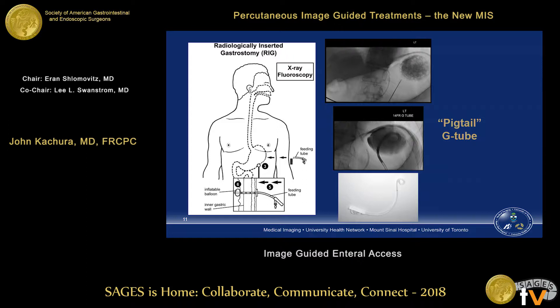For a radiologically inserted gastrostomy tube, the simplest approach is to use a pigtail or cope loop catheter. We inflate the stomach — usually via a nasogastric tube, but sometimes just with gas granules if the patient can swallow a bit — puncture the stomach using fluoroscopic guidance, pass a stiff wire in, and dilate the tract, usually with just one 14 French Coons dilator. We typically use a 14 French cope loop or pigtail tube. It's a pretty simple technique.